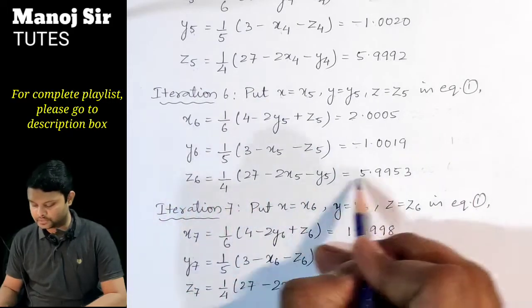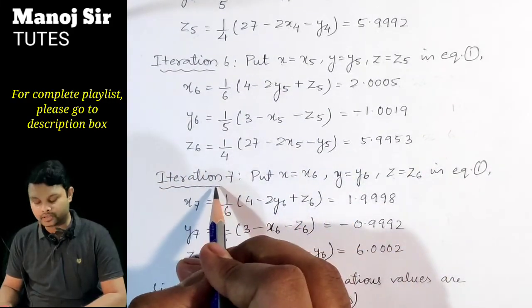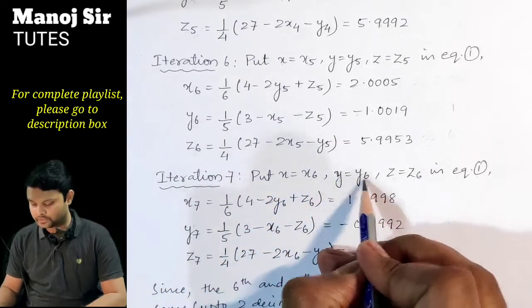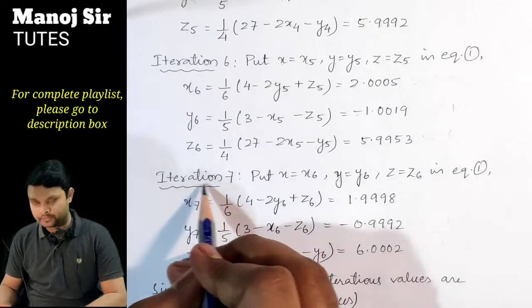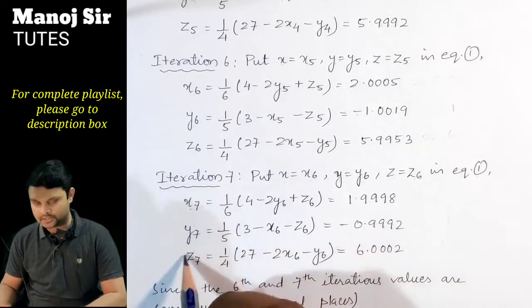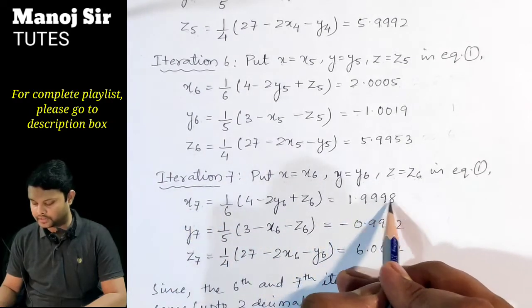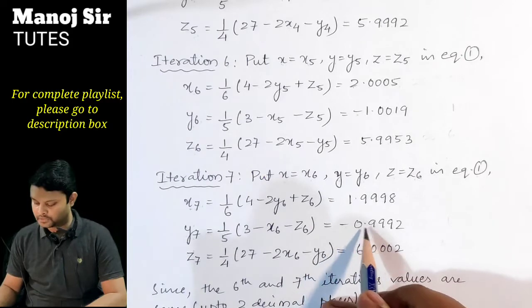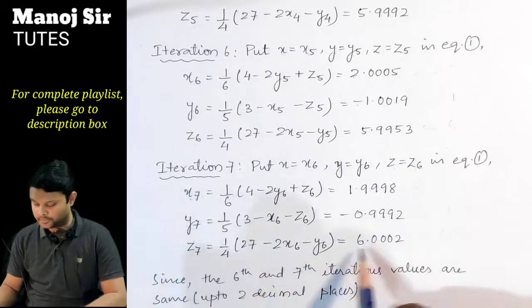For the seventh iteration, substituting x6, y6, z6 into equation (1) to find x7, y7, z7: x7 = 1.9998, y7 = −0.9992, z7 = 6.0002.